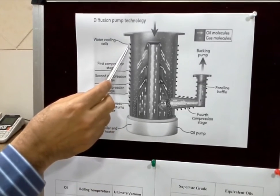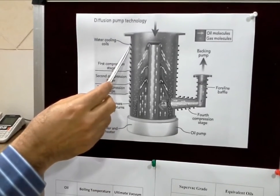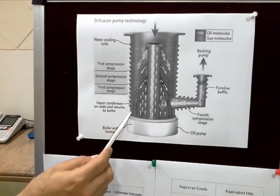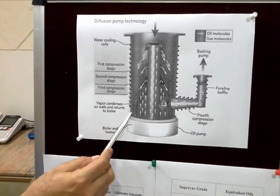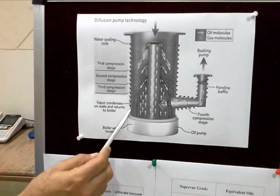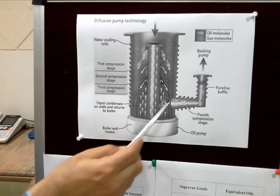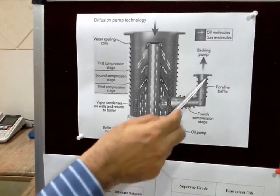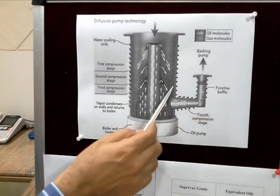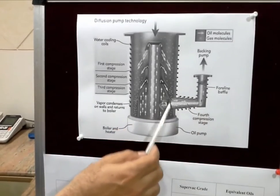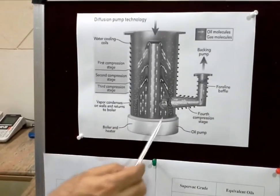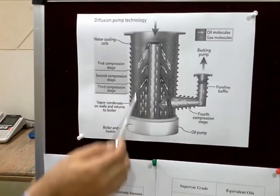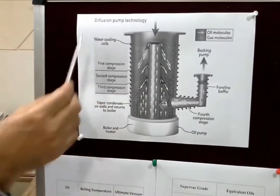Vacuum over here will be 10 to the power of minus 8 Torr or even above, and the vacuum over at this point will be somewhere about 10 to the power of minus 1 Torr. Over here a rotary pump comes in handy and pulls these air molecules that have been released by the oil. This is how the diffusion pump works. As we can see, the oil is the only working medium — there are no other moving parts in the diffusion pump.